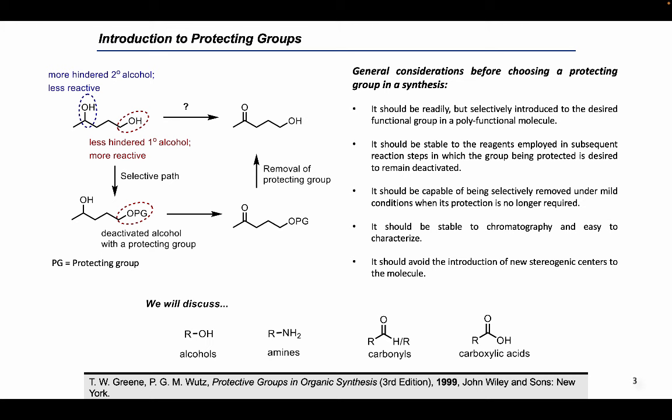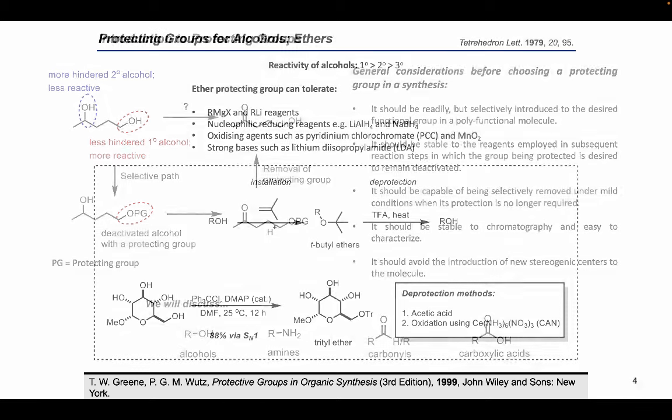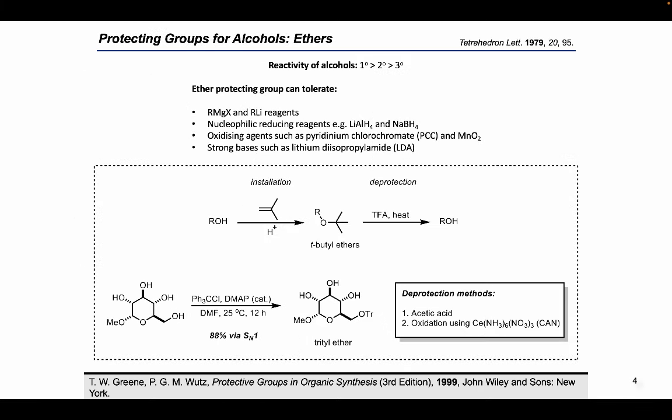Fortunately, the methods of protective group installation and removal have been highly developed and the yields are usually excellent. This episode presents information on synthetically useful protective groups for four major functional groups: the hydroxy group, the amine group, the carbonyl group (aldehydes and ketones), and the carboxylic acid group. Ethers are one of the most important protecting groups for alcohols.